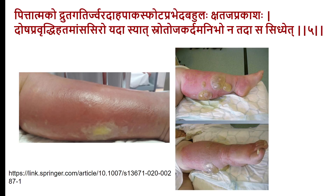In the Pitta-ja variety of Visarpa, the course is rapid, with burning sensation and severe toxemic symptoms — high fever and systemic signs. Blebs containing fluid resembling dirty material or pus of various colors are seen, attributed to gram-positive organisms. Pus forms and requires early drainage. In contrast to the Vata-ja variety requiring debridement, the Pitta-ja variety requires drainage.